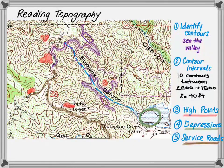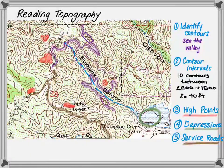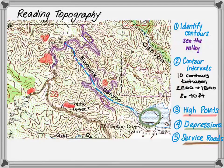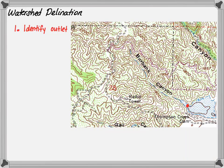Lastly, you need to notice that there are dashed lines in the topographic map, highlighted with a brown highlighter. Those lines represent service roads. Now that you know how to read a topographic map, we're ready to delineate a watershed.